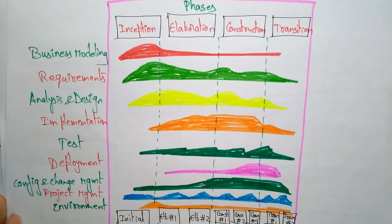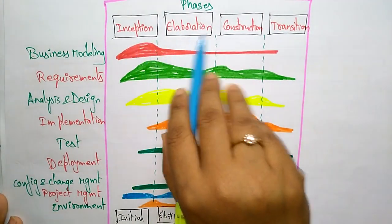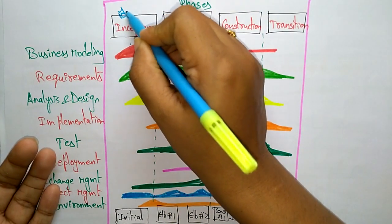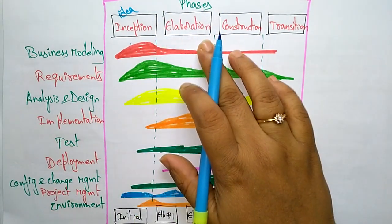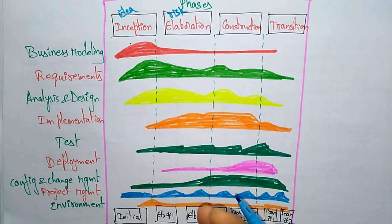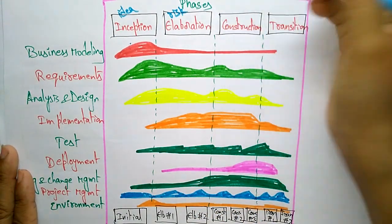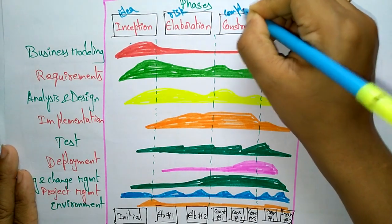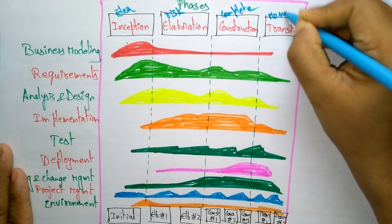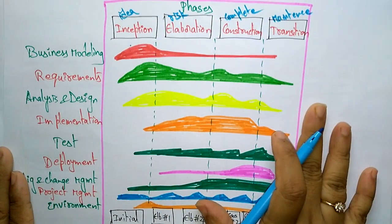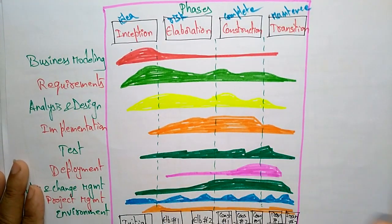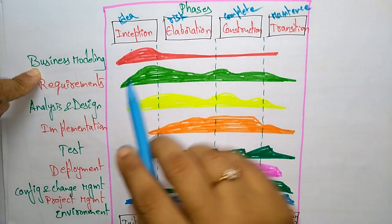Here is a diagram showing the four phases: Inception, Elaboration, Construction, and Transition. Inception is the basic idea and starting step. In Elaboration you find risks and gather requirements. In Construction you complete the project. In Transition, maintenance is carried out.